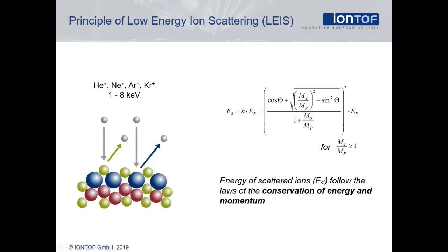In LEIS, noble gas ions are scattered from the surface atoms of the sample. The energy after the collision is given by a formula based on classical mechanics. As the mass and energy of the incoming ion and the angle and energy of the scattered ion are known, the mass of the surface atom can be calculated. In this way, the scattering peaks in the LEIS spectrum are used to identify the elements in the surface of the sample.